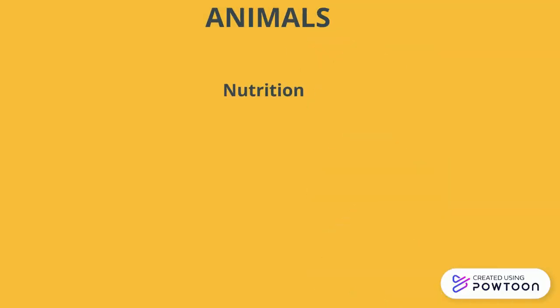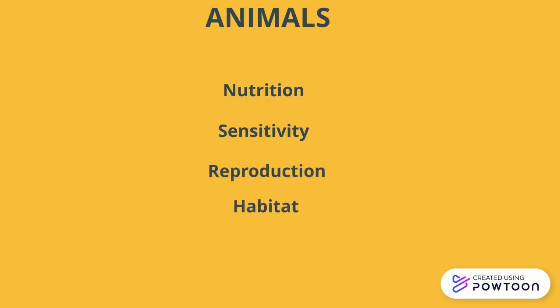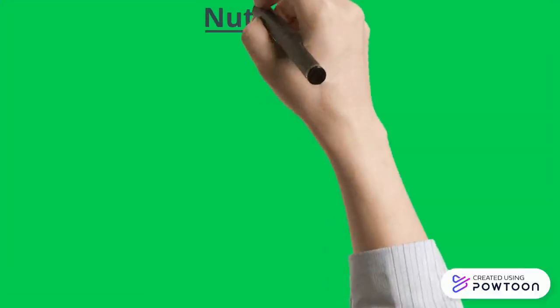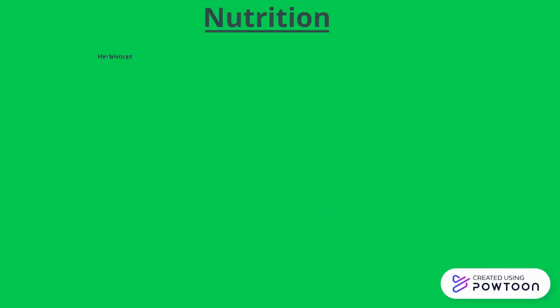We are going to talk about nutrition, sensitivity, reproduction, habitat, and also the difference between vertebrate and invertebrate animals. There are five types of animals according to nutrition.